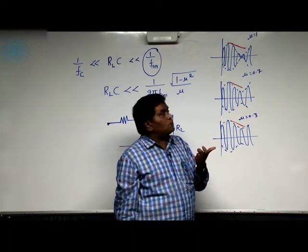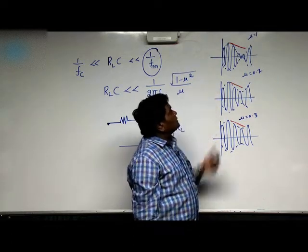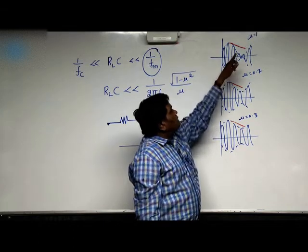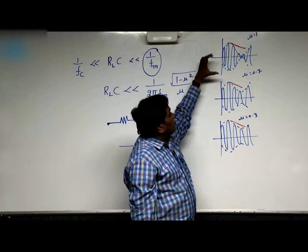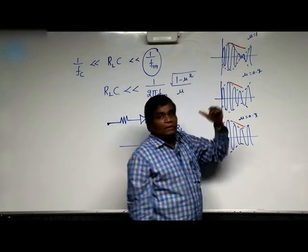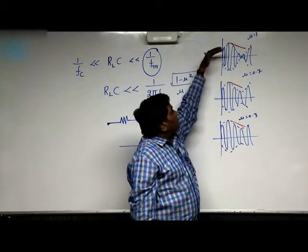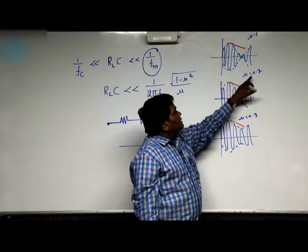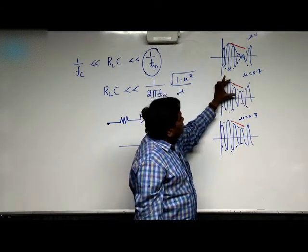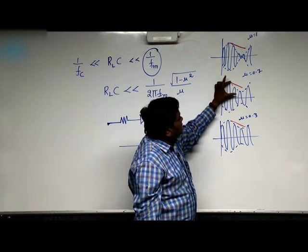So one possible solution for this is changing the value of mu. When mu changes, the amplitude variation of the signal changes. When mu is 1, the v maximum and v minimum variation is more. When you decrease the value of mu, the v maximum and v minimum variation will be less.